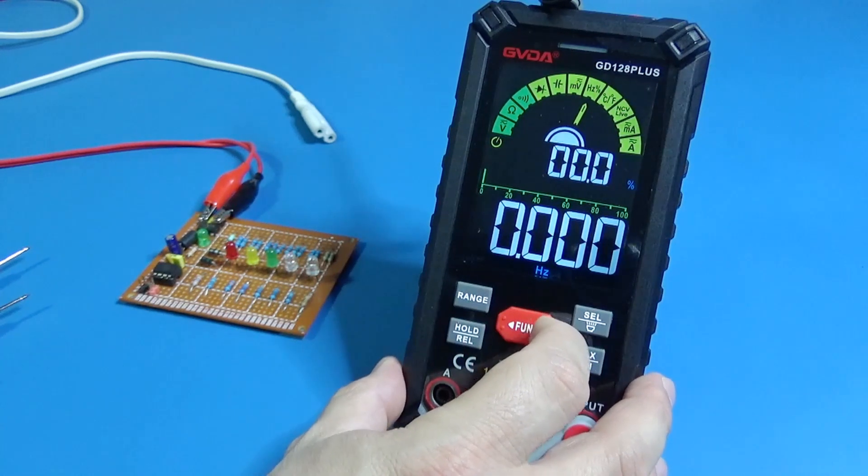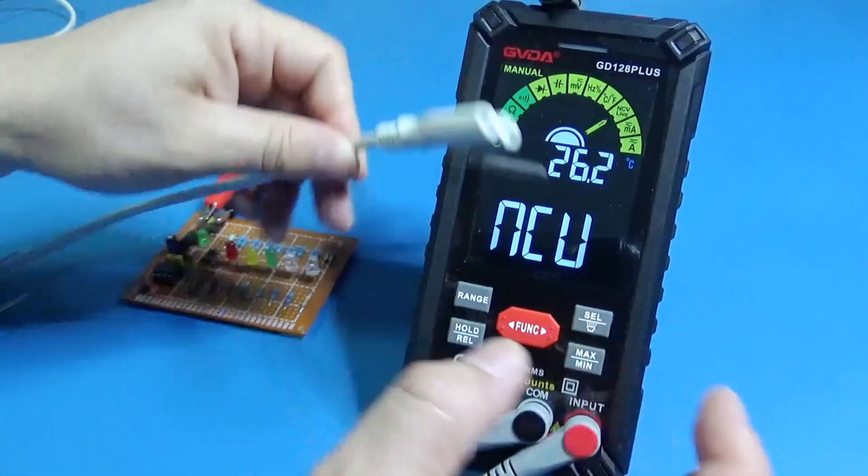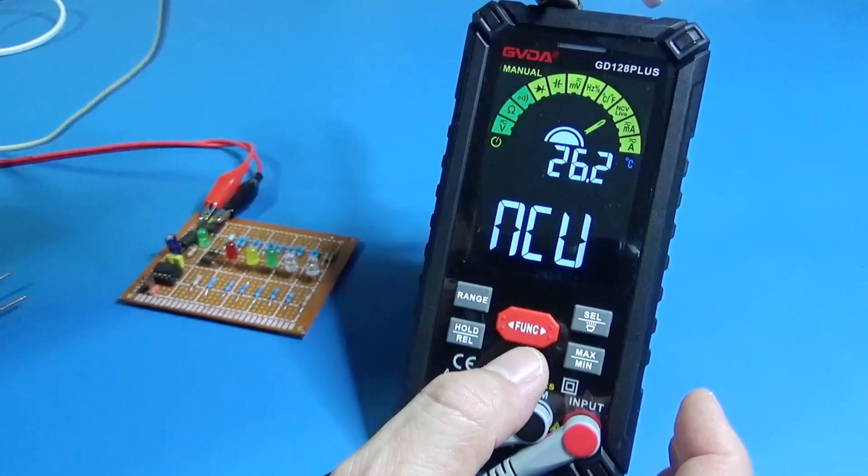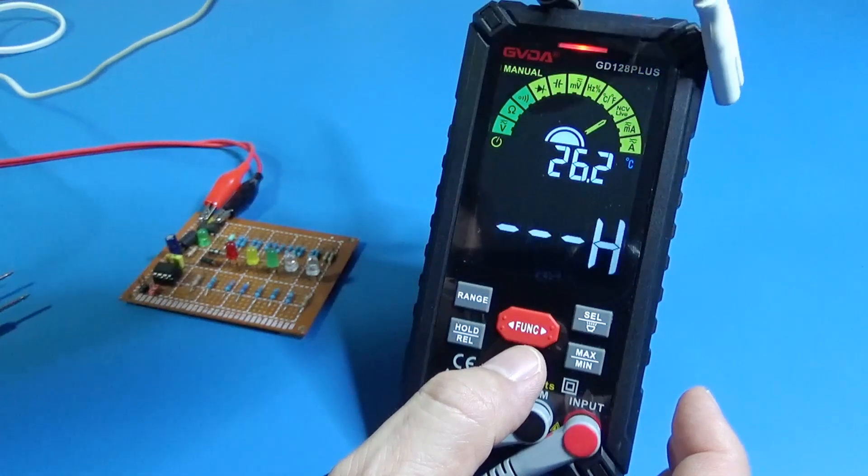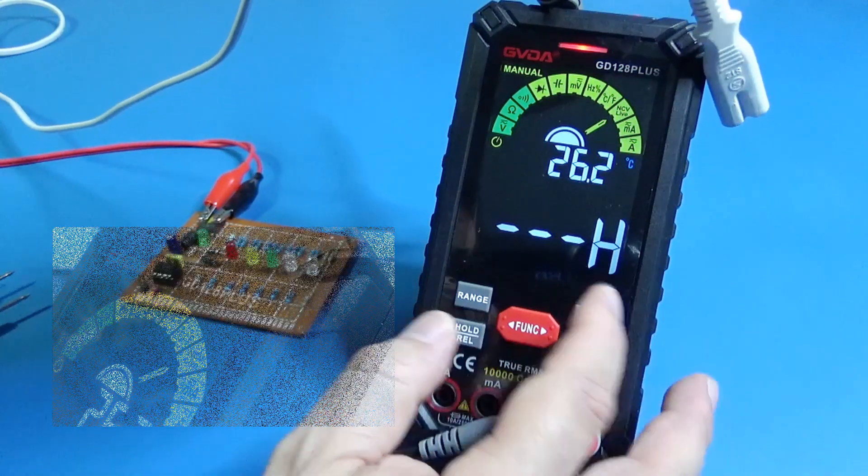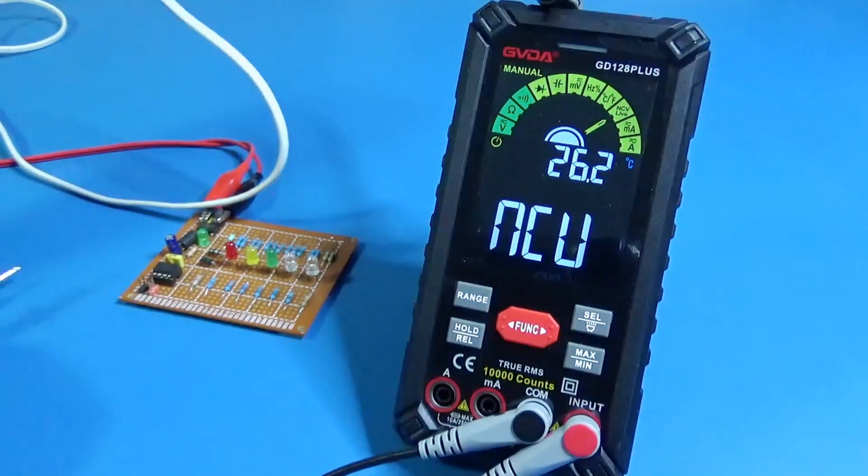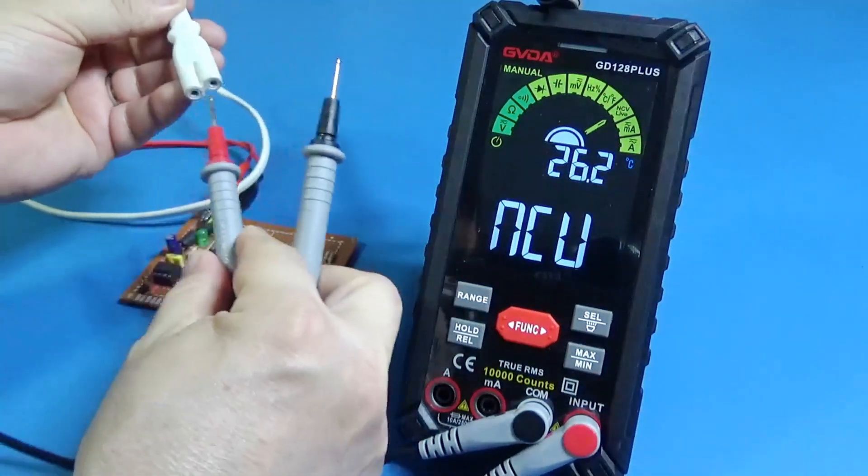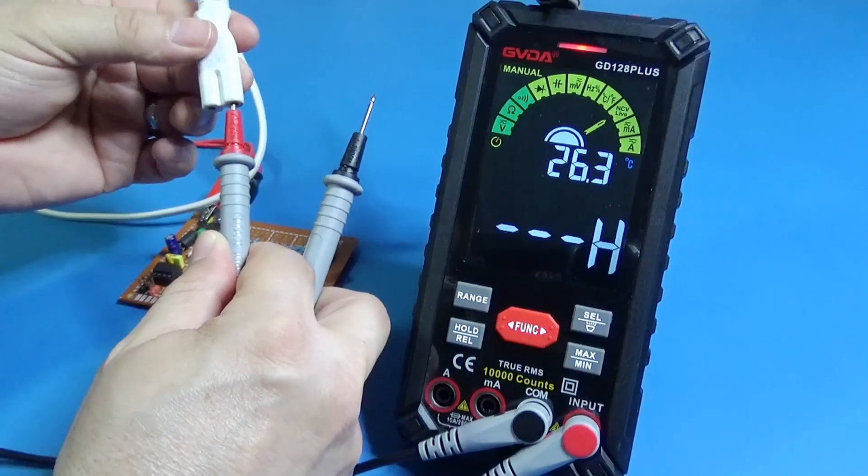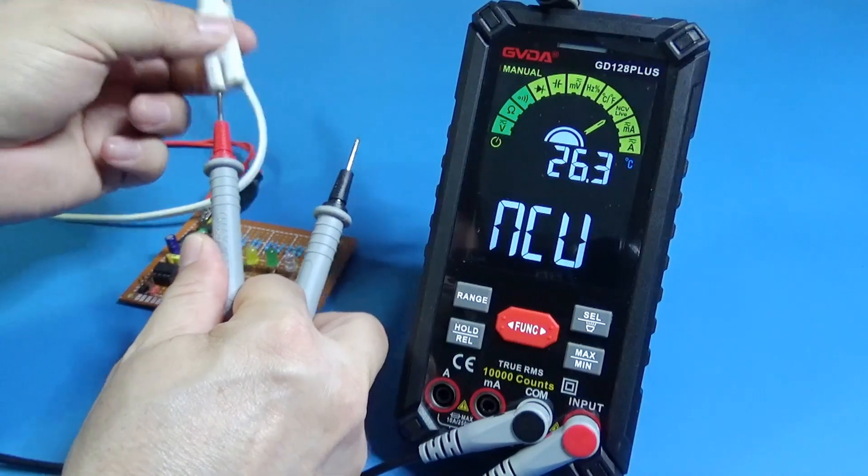And I just want to go to the NCV function to see where is this guy. Oh, it looks like it has here the sensor in the direction of the arrow, that's a good location. So if I use a positive lead it detects which one is the live line. And that's great.